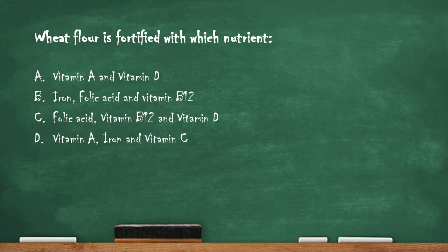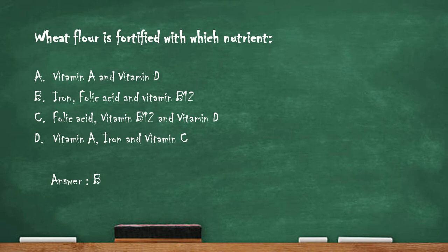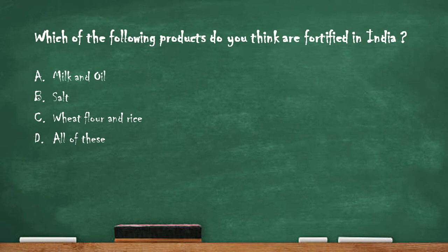Next question: wheat flour is fortified with which nutrient? Option A: vitamin A and vitamin D. Option B: iron, folic acid, and vitamin B12. Option C: folic acid, vitamin B12, and vitamin D. Option D: vitamin A and vitamin C. The right answer is that wheat flour is fortified with iron, folic acid, and vitamin B12.